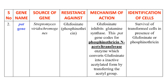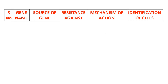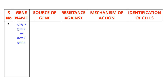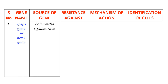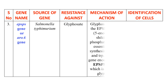The next example of a herbicide resistance gene is the EPSPS gene, also called the ROA gene. The source of this gene is Salmonella typhimurium, and it provides resistance against the herbicide glyphosate.